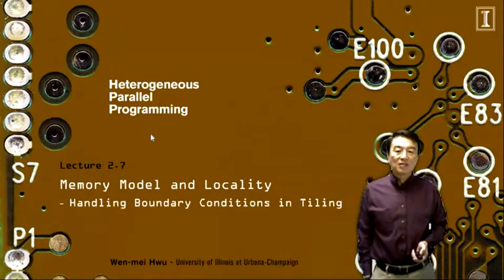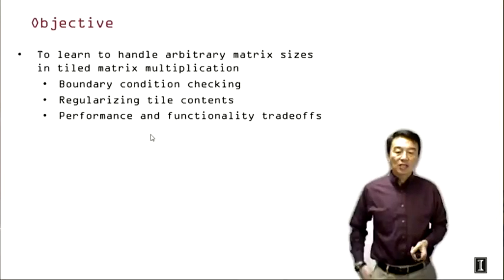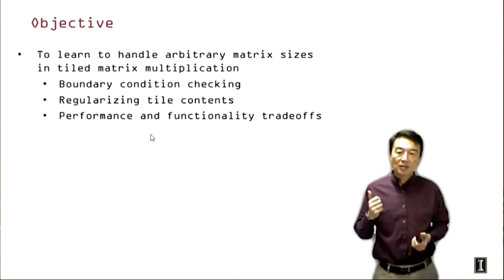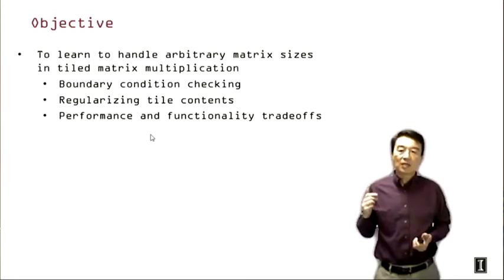We're going to be focusing on handling boundary conditions in tiling. The objective of this lecture is to help you learn to handle arbitrary matrix sizes in tiled matrix multiplication. We're going to be going through boundary condition checking and how we can regularize the tile contents. And then we will also begin to think about performance and functionality tradeoffs in parallel programming.